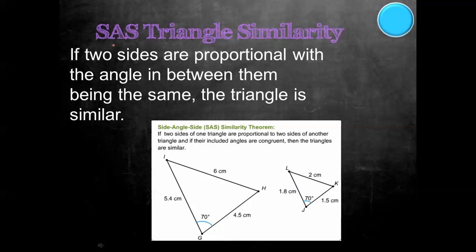The other postulate we use is side-angle-side triangle similarity. What that says is that if two sides are proportional and the angle in between them is congruent, then the triangle is similar.